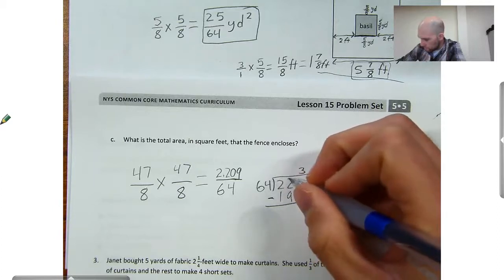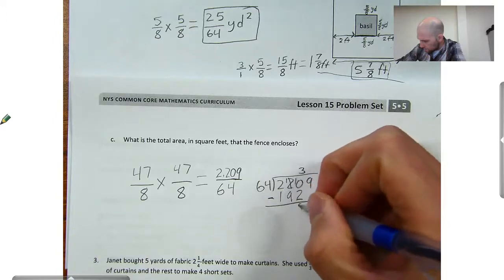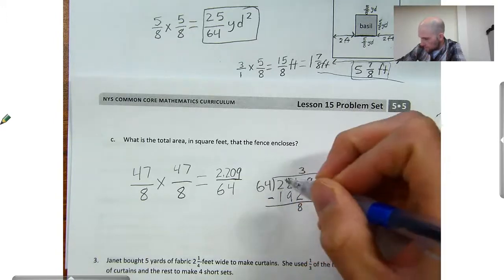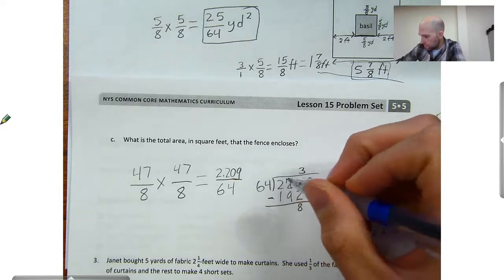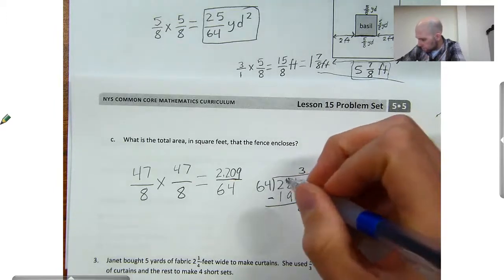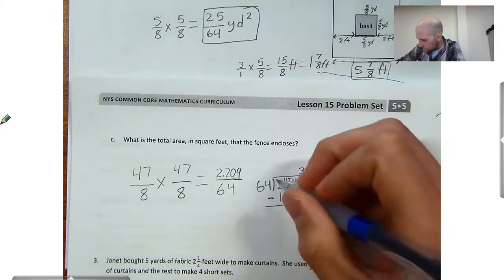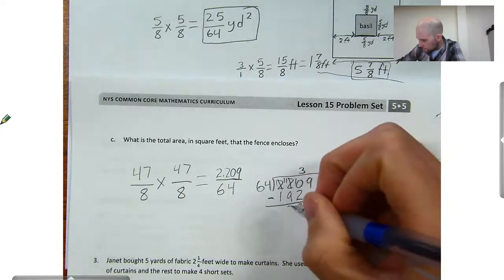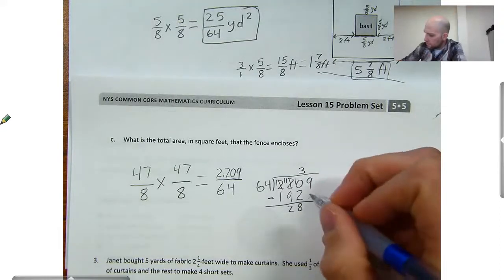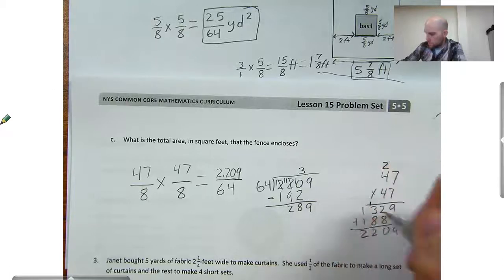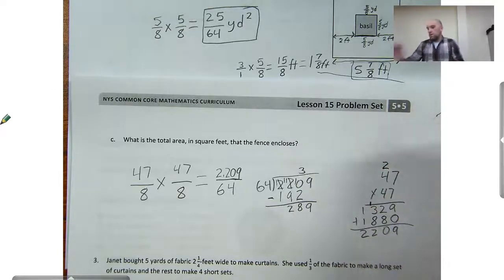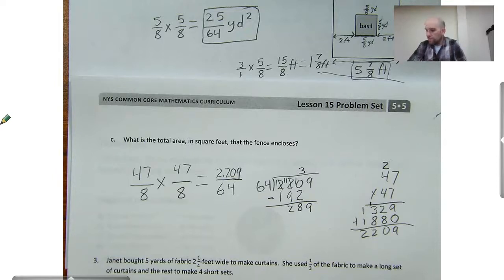I'll have 28 left over. I'll bring down my nine. 289. Well, 128 plus 128, we can figure that out now. That's 256. So that will be four times 64 is 256.